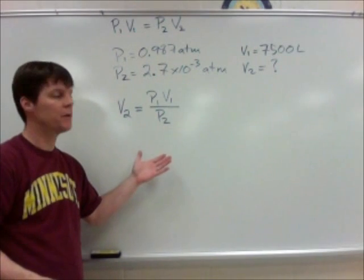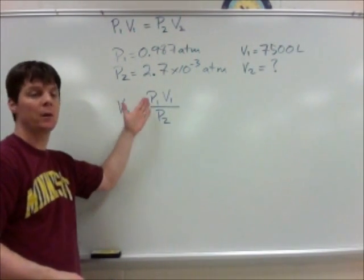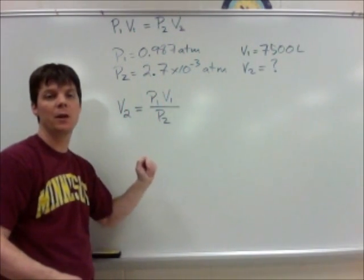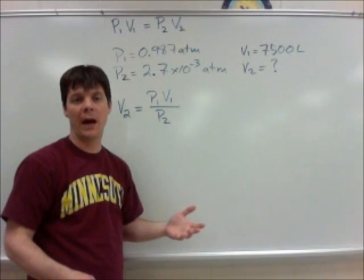Now that we've solved our equation in terms of the unknown, V2 equals P1 V1 divided by P2, we'll substitute in our known values and solve.